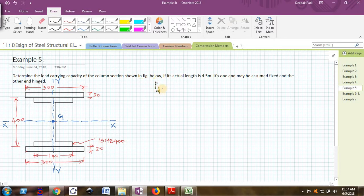I will write the formula to find the design axial load capacity which is given as P_D = F_CD × A_E. In this case A_E is the effective cross section area of this column, which is the effective cross section area of ISMB 400.